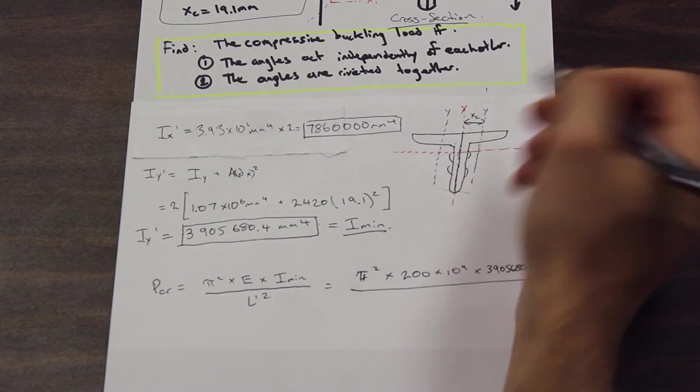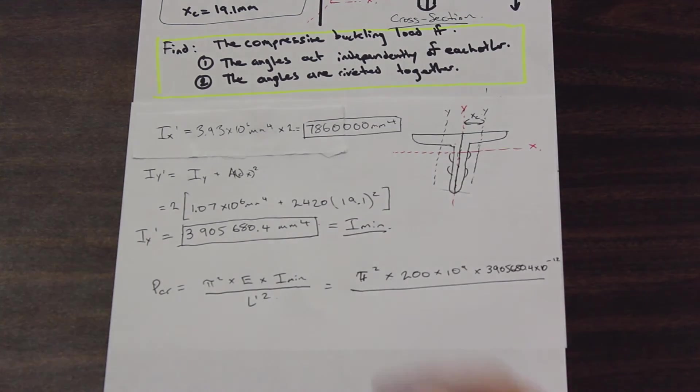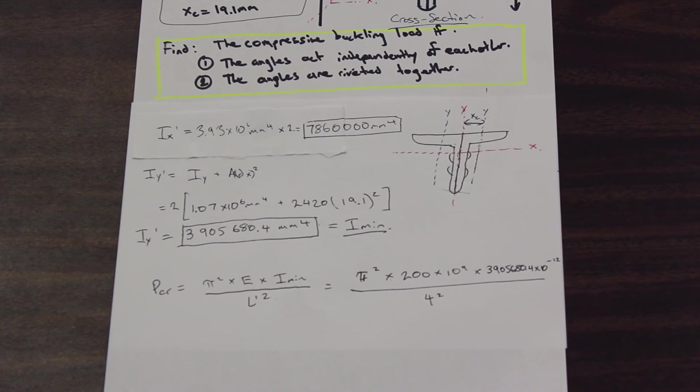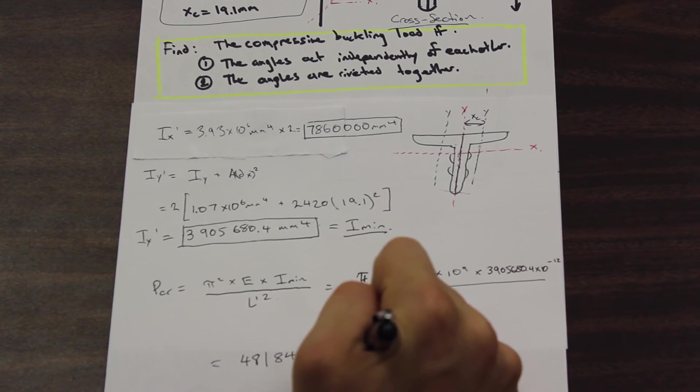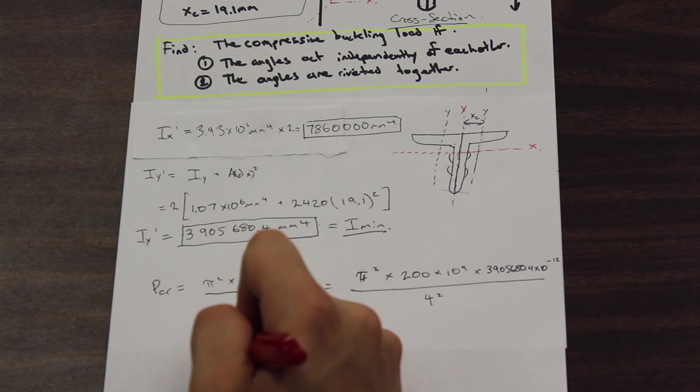Over our L, which is, as given before in the question, is 4 meters, and it's pin-pin, so L_prime is 4 meters, and that's going to be 4 squared. And we're going to arrive at a Euler buckling load of 481,844.006 Newtons, which is our critical buckling load.